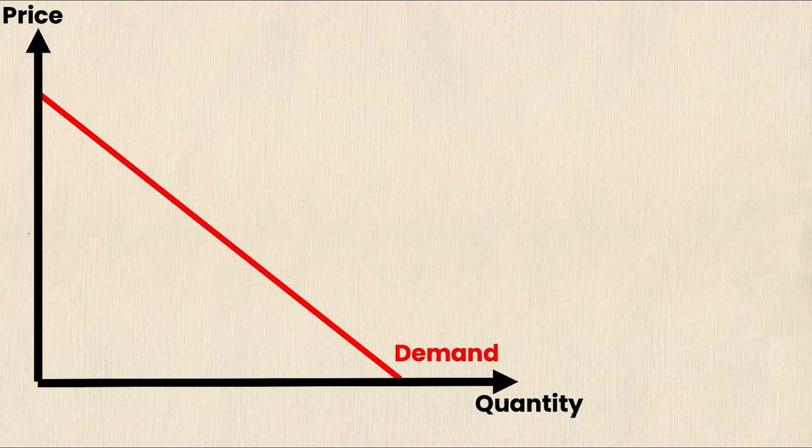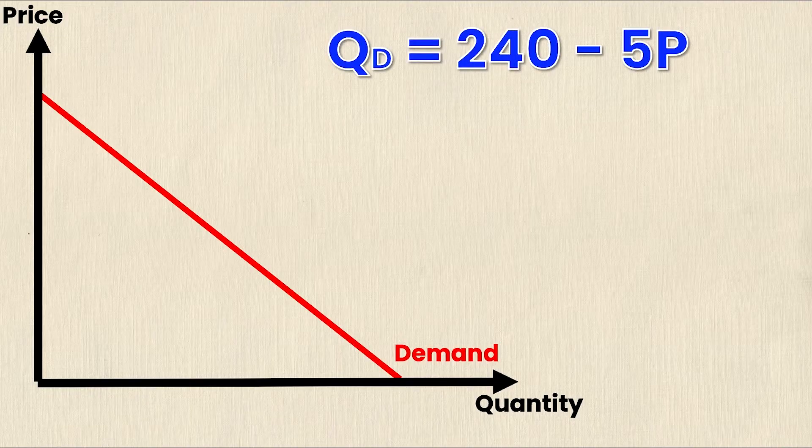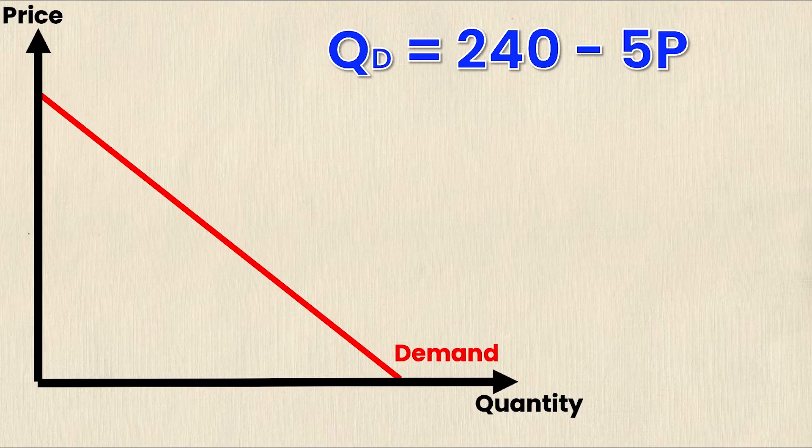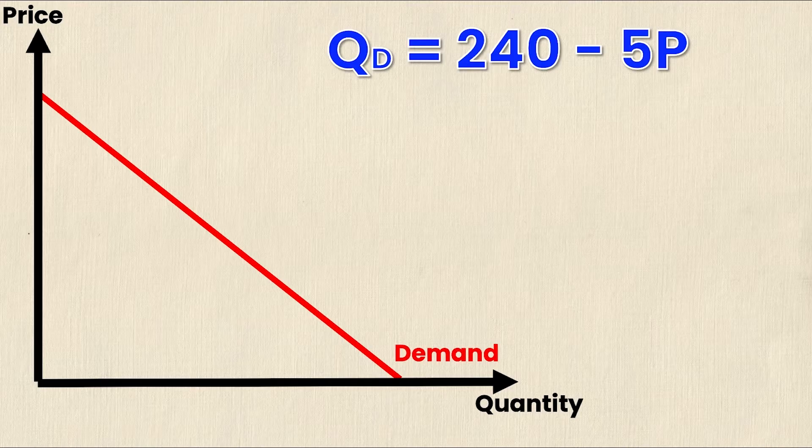Let's take a look at a general demand equation. This is just a normal demand equation that you would see on homework: Q_D equals 240 minus 5P. Q_D equals the quantity demanded and P equals price. There's a negative coefficient on P, which makes sense because there's a negative relationship between Q_D and P as per the law of demand.